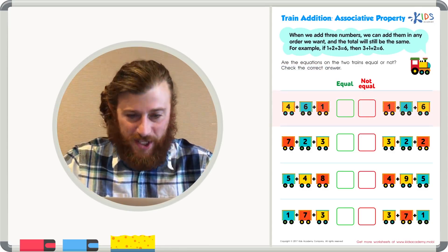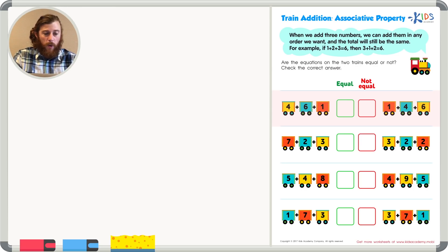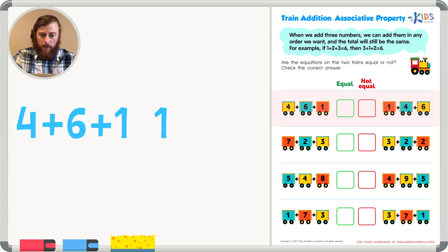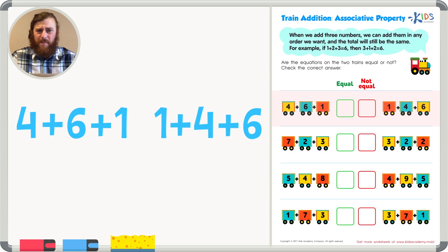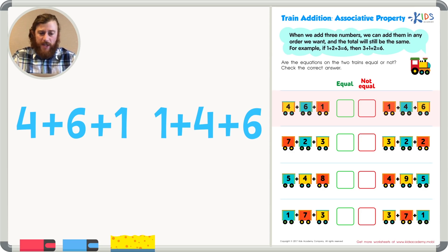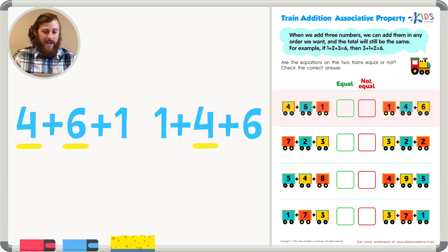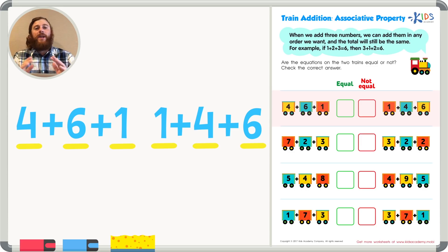Let's take a look at our first example. On our first train we have 4 plus 6 plus 1, and on our other train we have 1 plus 4 plus 6. If the associative property states that it doesn't matter what order we add the numbers in, well, if all the numbers are the same, we know the sum is going to be equal. So let's first make sure that all the numbers in both equations are the same. I have a 4 on this train and a 4 on this train, a 6 on this train and a 6 on this train, a 1 on this train and a 1 on this train. So I'm beginning to think that these sums are going to be equal.